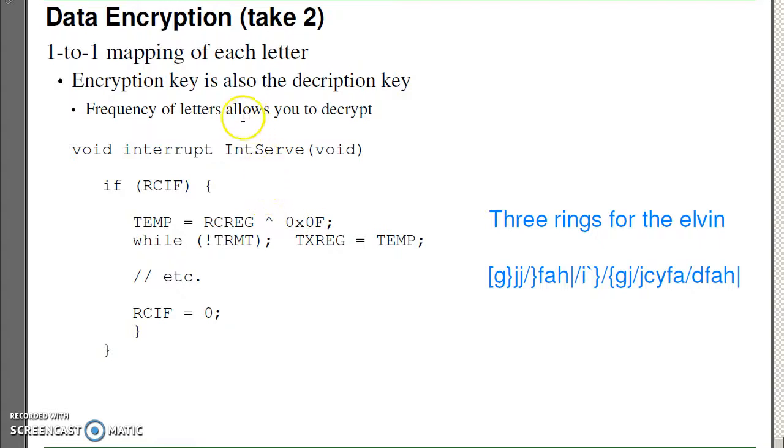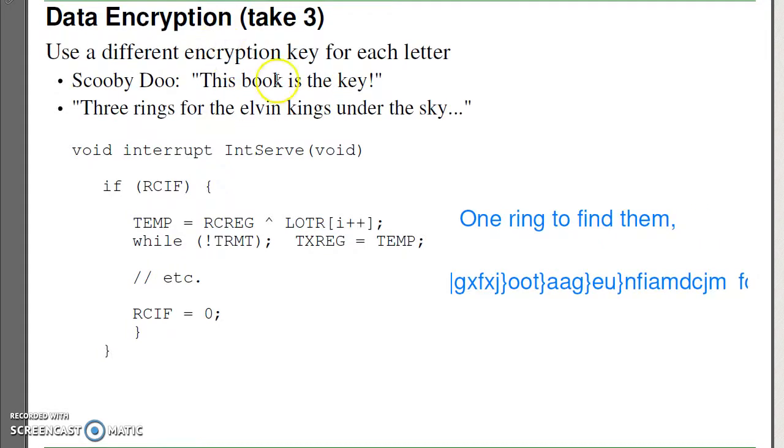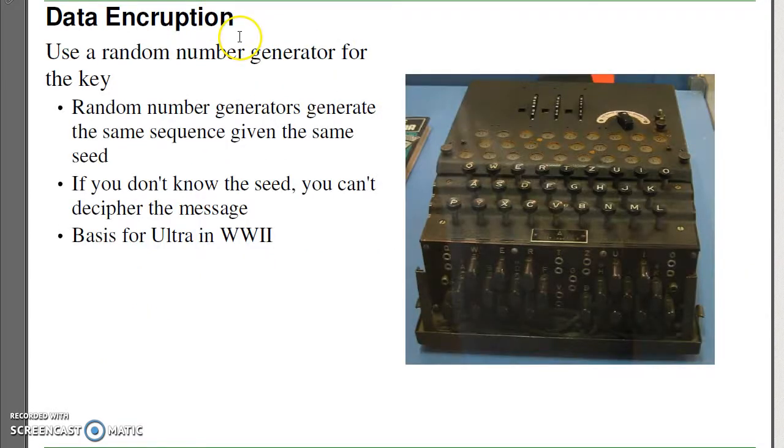The problem with that type of encryption is it's a one-to-one mapping. I can decode it just by counting the frequency of each letter. The third type of encryption uses a book like Lord of the Rings. I'll encrypt the first letter with T-H-R-E-E. Gives you more gibberish. If you ever see a Scooby-Doo episode where they say the book is the key, that's what they're referring to.